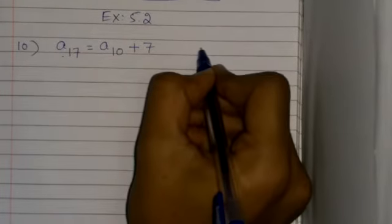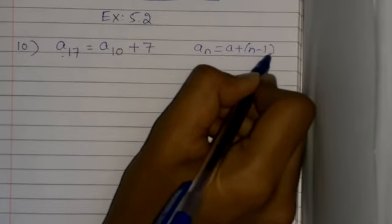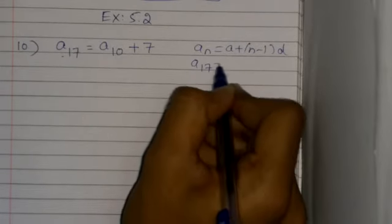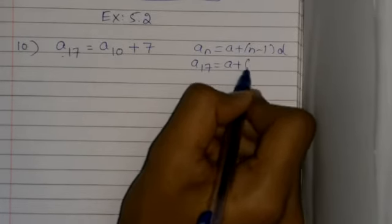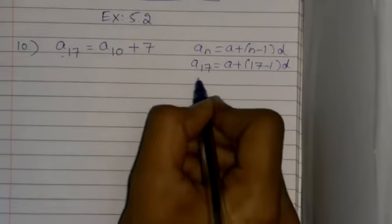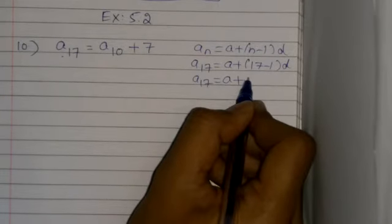We have to find the common difference. We know that an = a + (n - 1) × d. So a17 = a + (17 - 1) × d, which equals a + 16d.